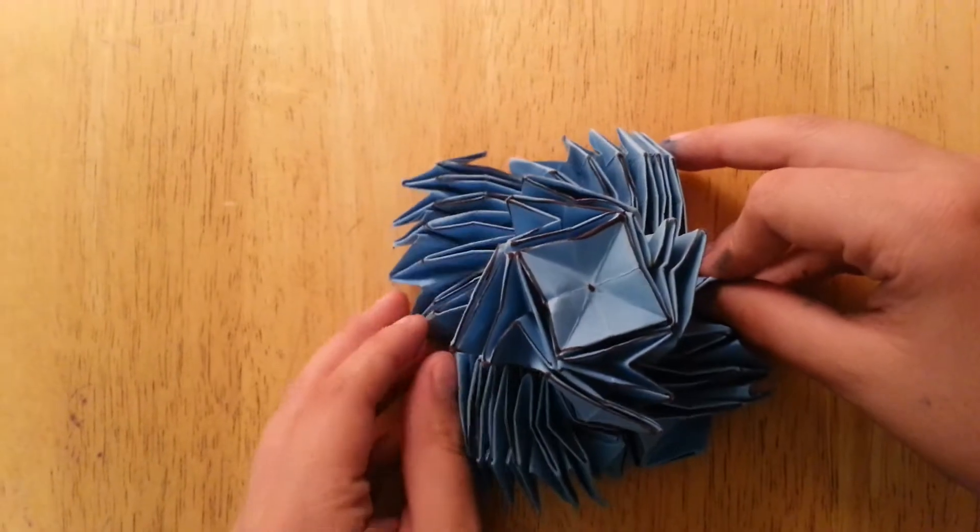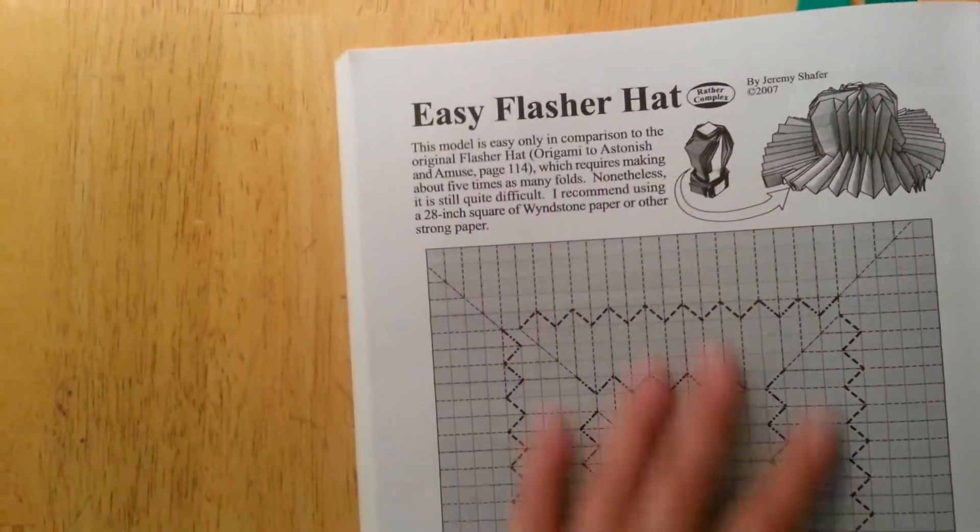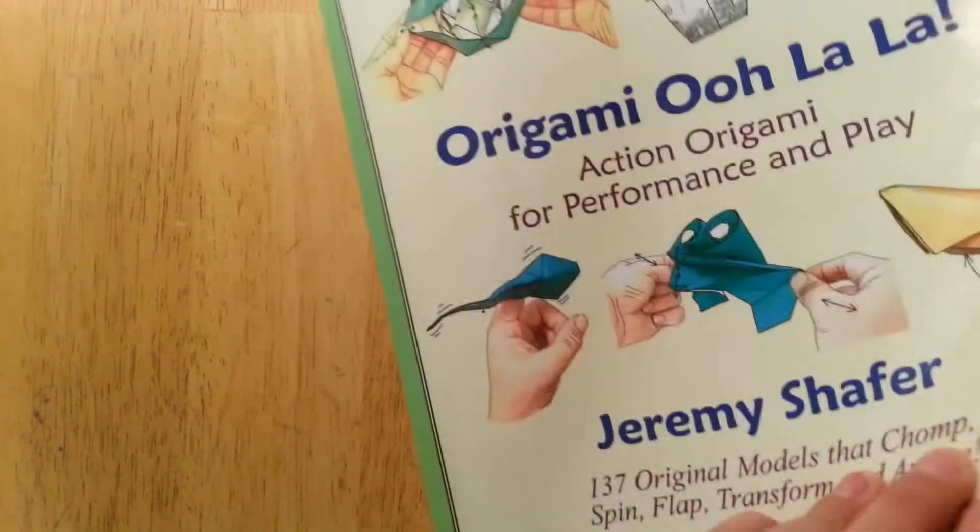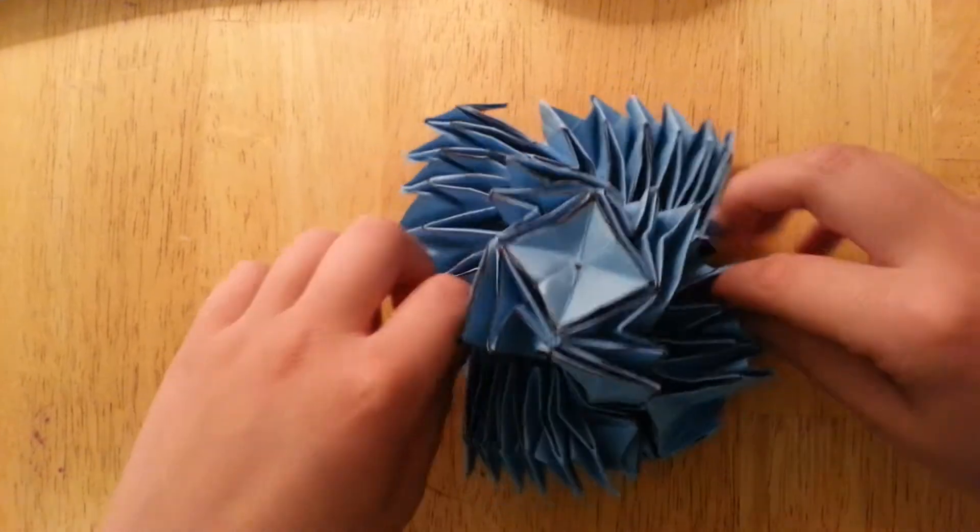It's not published in a book, but it's a variation to the easy flasher hat that is published in Jeremy Schaefer's second book, Origami Ooh La La. So here it is. I'm gonna open it up completely, well not completely or else I'll be unfolding it.